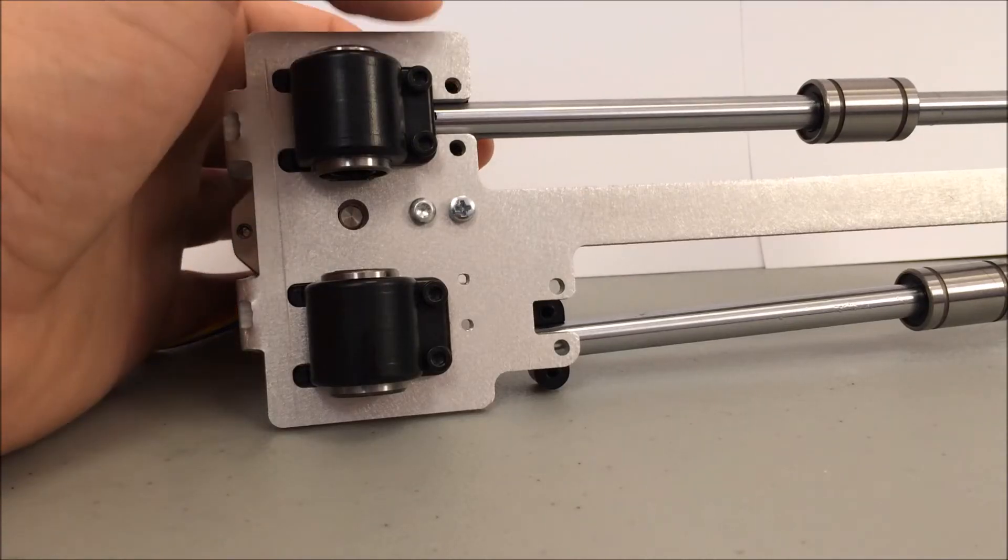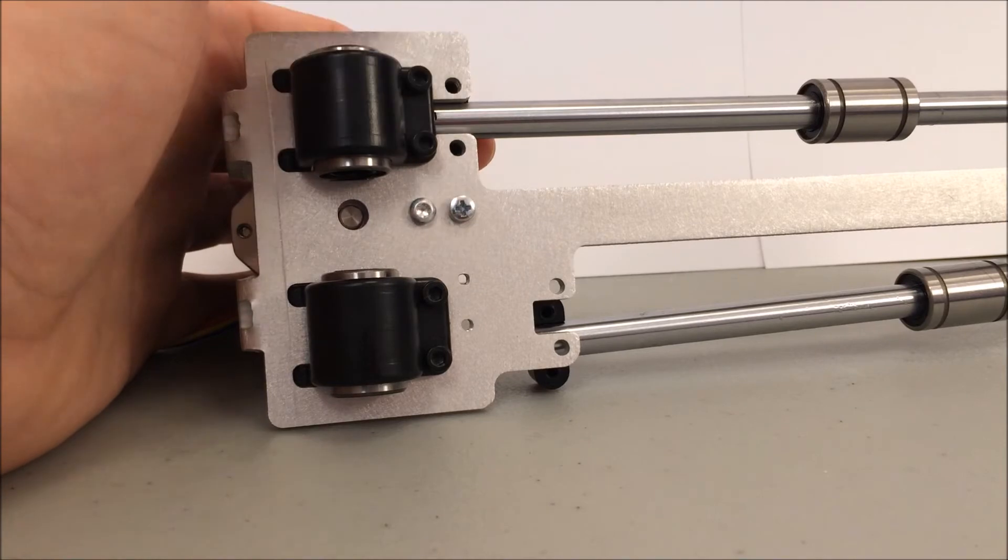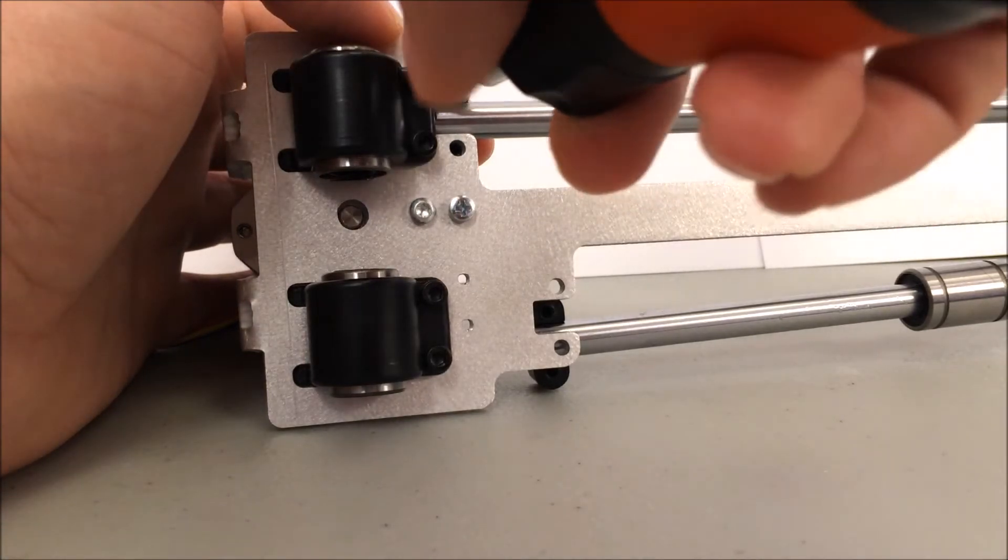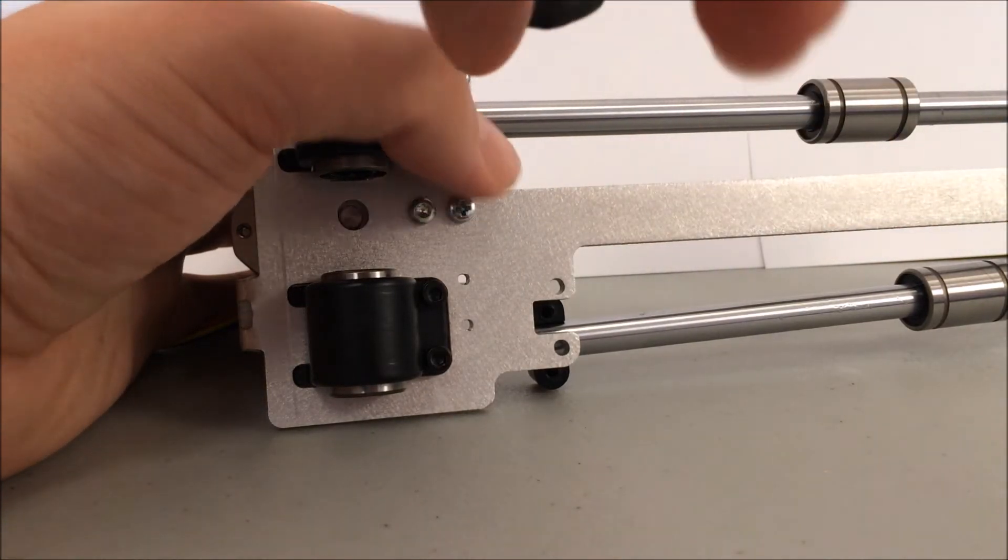I already have my rod clamp ready back here. I've started to attach the plastite screws in the front. I'm not gonna tighten them all the way down. I'm just gonna get them started and then tighten them all down together.